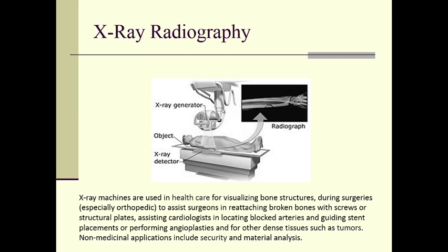In projectional radiography, a flat two-dimensional image is generated. The patient will either be standing or lying on a table. The X-ray detector is placed on the back side of the patient. The X-ray generator generates X-rays that pass through the patient's body; some radiation is absorbed by the bones while the remaining passes to the detector, which may be a photographic plate or a digital detector, producing a radiograph.